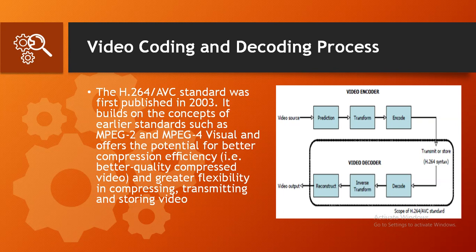Quality is still good in the baseline profile, but not as high as when using the main or high profile, which incorporates both techniques. Because those techniques are not used, the decoding requirements for baseline-encoded streams are modest, so low-power devices like the original video-capable iPod can only decode that profile. H.264 levels specify the maximum data rate and video resolution a device can play back. For example, Apple's iPad 2 can play video encoded using the main profile level 3.1, meaning a maximum resolution of 1280×720 at 30 fps and a maximum data rate of 14 Mbps.